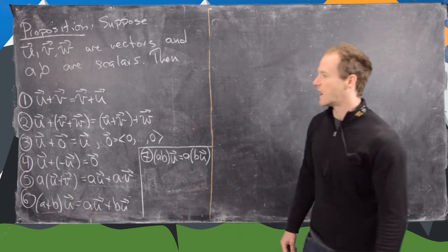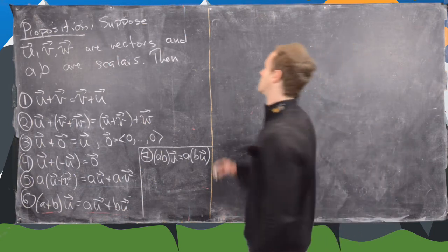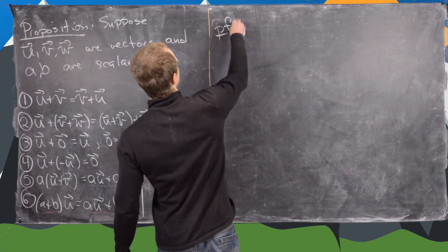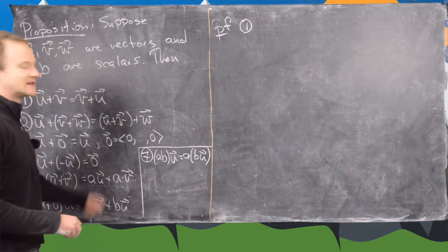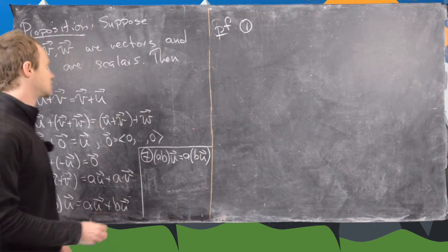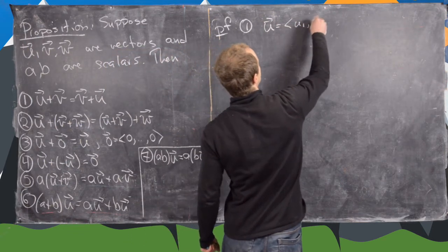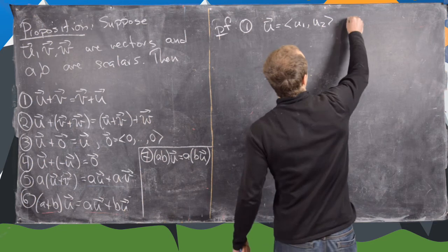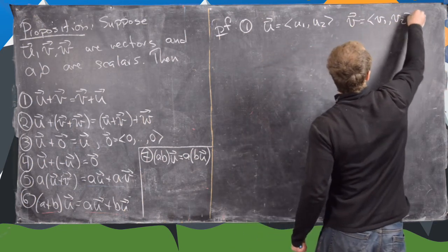So proof, let's do one and we'll prove them all with two-dimensional vectors because it easily extends to higher dimensional vectors. So let's set u equal to vector (u1, u2), and let's set v equal to vector with components (v1, v2).